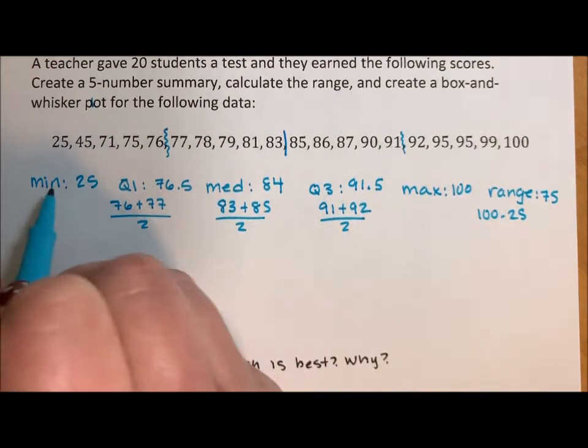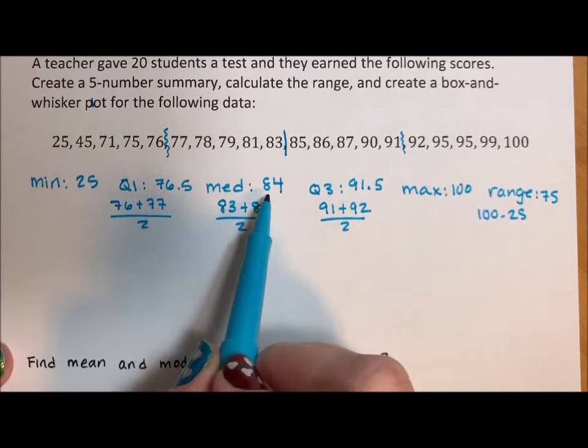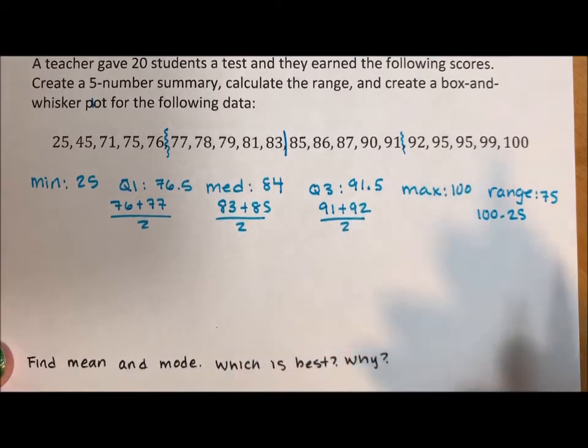Okay, so this is the five-number summary: 25, 76.5, 84, 91.5, and 100.